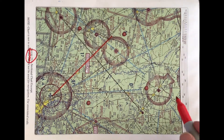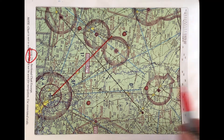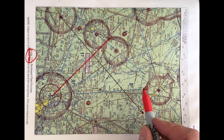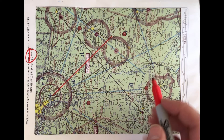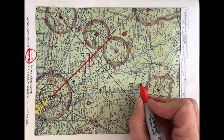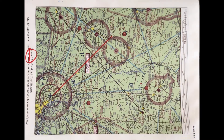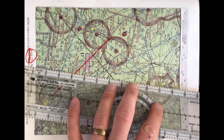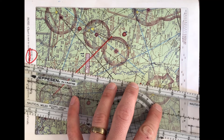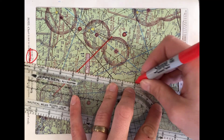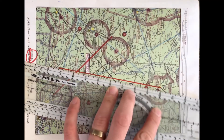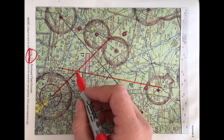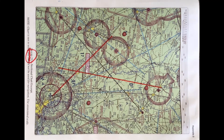Now we want to find the 191 degree radial on Allendale. We have 180 here, 185, 190 right there — so it's going to be right after this notch. Then we do the same thing: find the center and draw outwards on the 191 radial. And then where these two lines cross, right here, is where the position of our aircraft is.